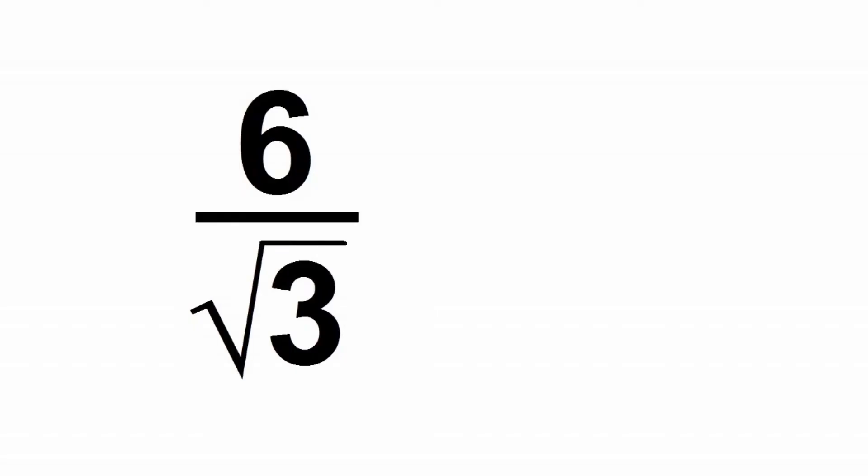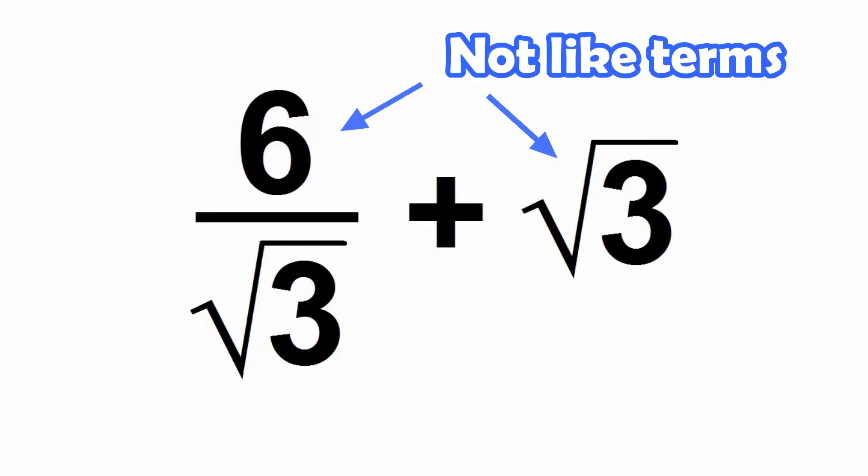Say, for example, you wanted to see if you could simplify this expression: 6 over the square root of 3 plus the square root of 3. If we just leave this fraction untouched, then there isn't really anything we can do with this expression. These are not like terms, they cannot be combined or simplified, we just have to leave it as it is.